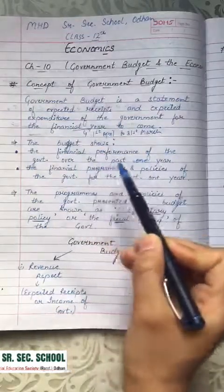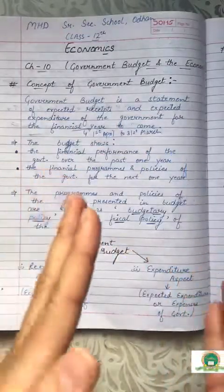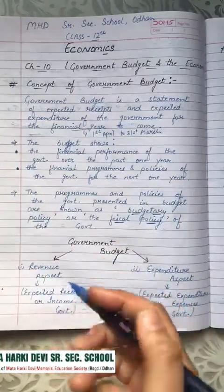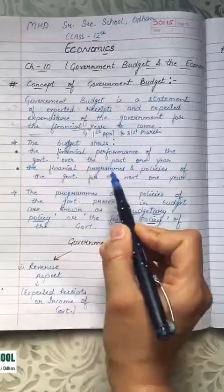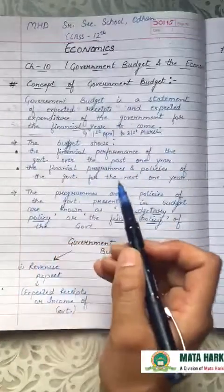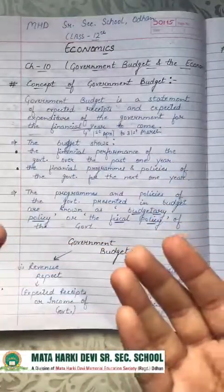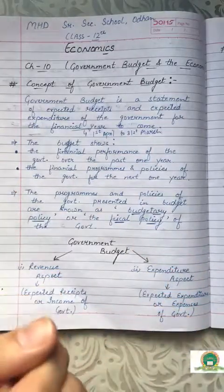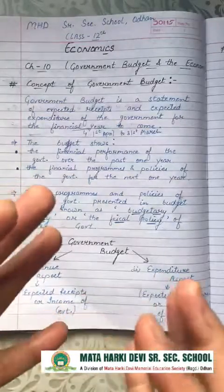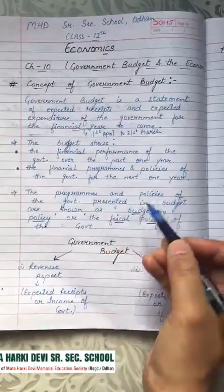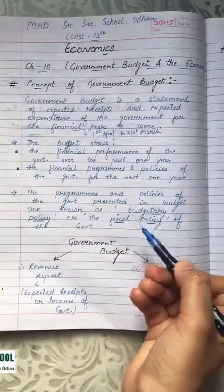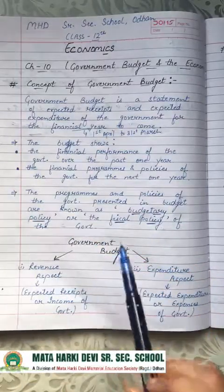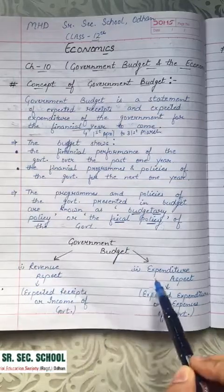Basically the budget shows two things: one is the financial performance of the government over the past one year, and second is the financial programs and policies of the government for the next one year. Government budget has two aspects — one is the revenue aspect and the other is the expenditure aspect.